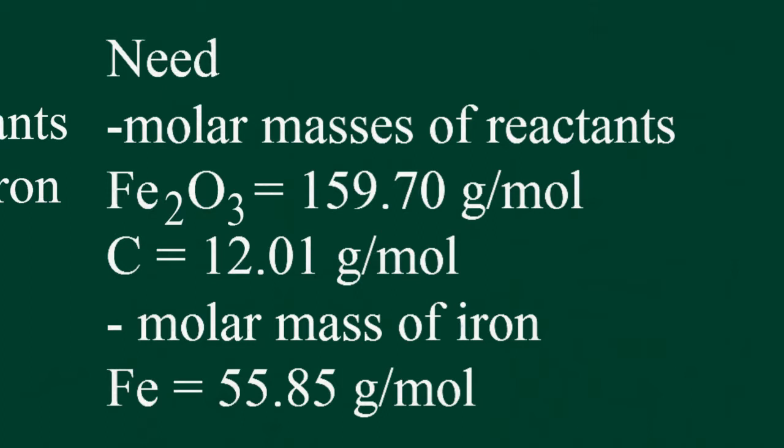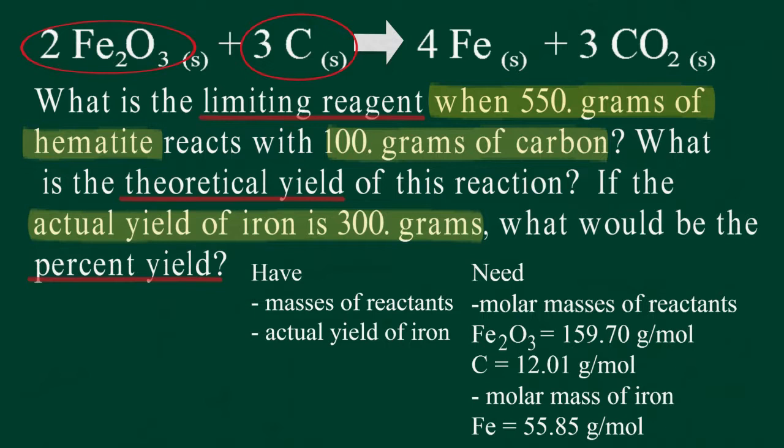We need to gather some information that is missing from the problem, such as the molar masses of hematite, carbon, and iron. We also need the formula for percent yield.